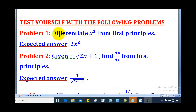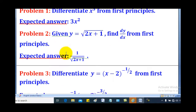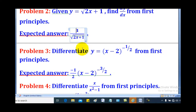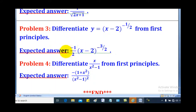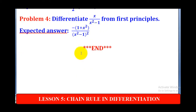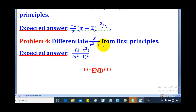With that knowledge, you should be able to try these questions. Problem 1: differentiate x cubed from first principles — the answer is 3x squared. Problem 2: differentiate y equals the square root of (2x + 1) from first principles. Problem 3: differentiate y equals (x minus 2) to the power negative one half from first principles — the answer is negative one half times (x minus 2) to the power negative three over two. Problem 4: differentiate x over (x squared minus 1) from first principles — the answer is negative one half of (1 + x²) over (x² minus 1) all squared.